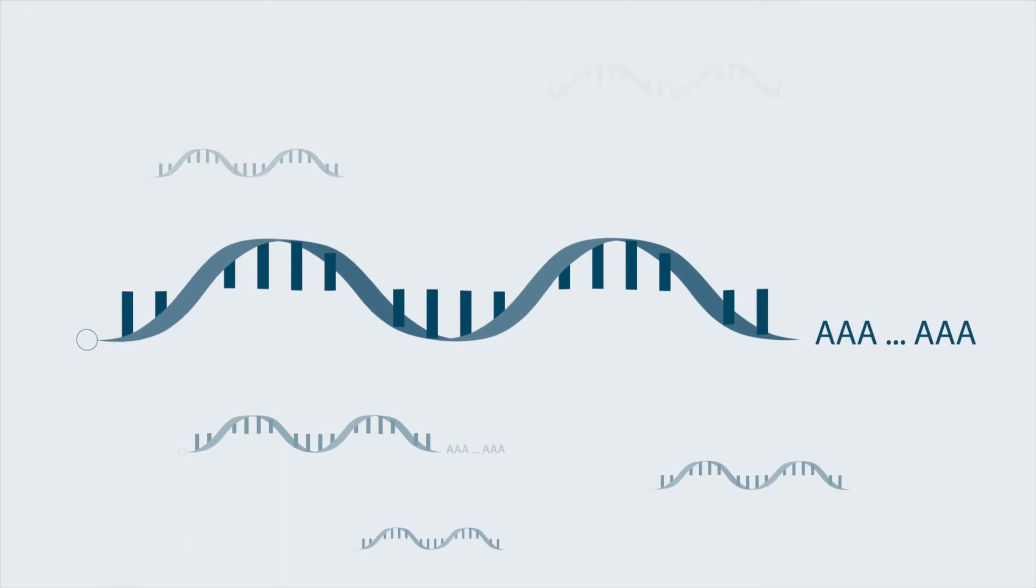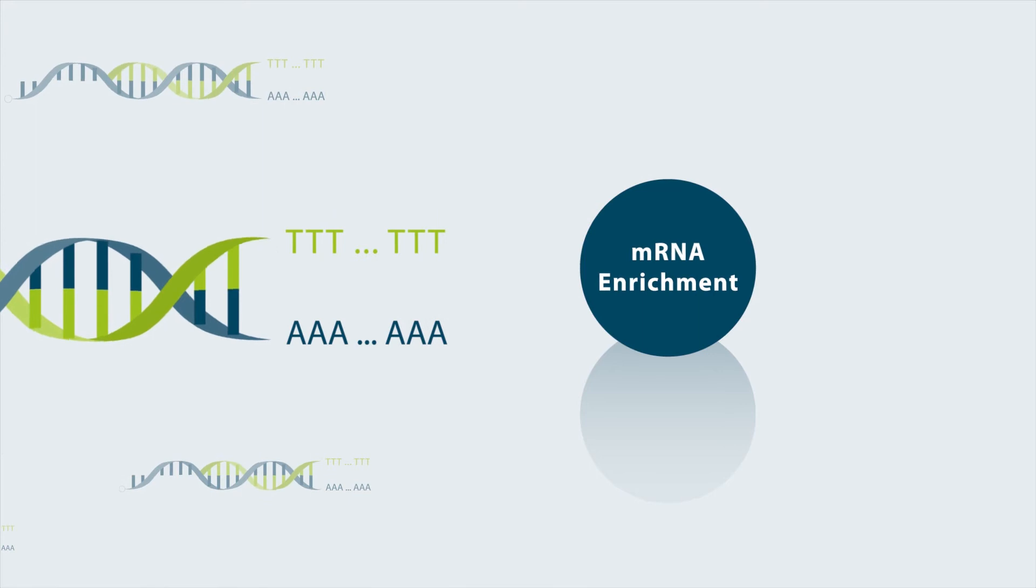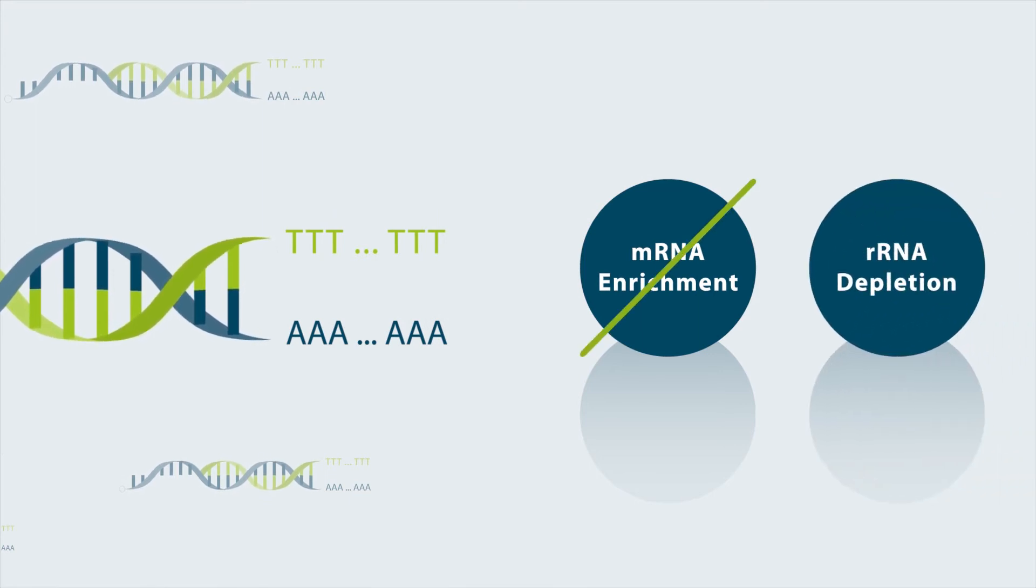Fragments are generated by priming in the polyA tail. Only polyadenylated mRNA is channeled into the library prep. No additional pre-processing is necessary, such as mRNA enrichment or ribosomal RNA depletion.